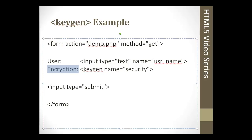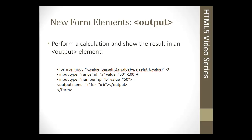The next thing we have is the output tag, which performs a calculation and would show the result in an output element. Here we have an example of that. It's a little complex. We have the oninput attribute with a little bit of JavaScript, and we provide the range. I'm not going to have an example for this in this section, but we might revisit it in chapter 4 or 5.